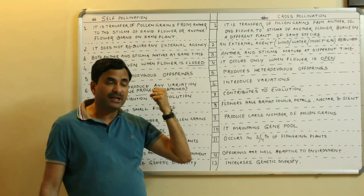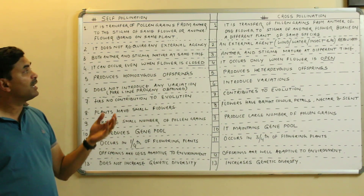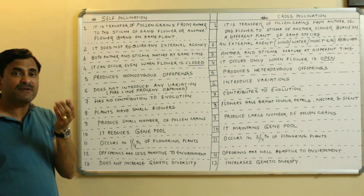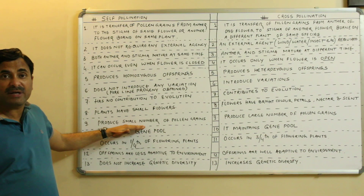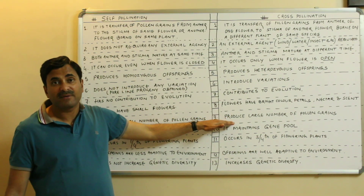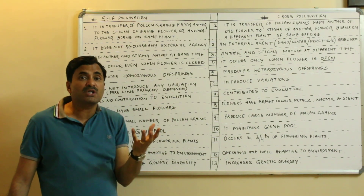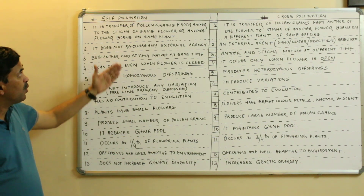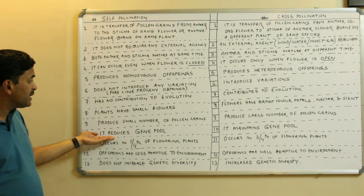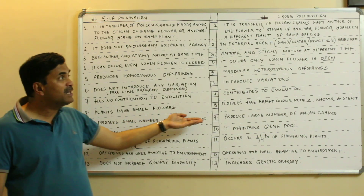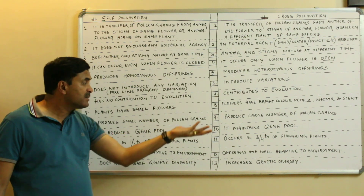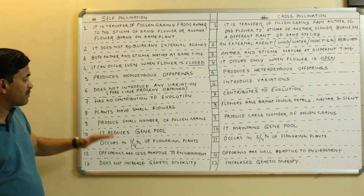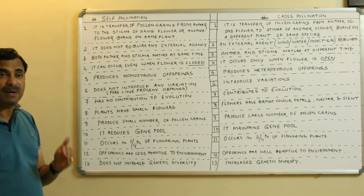Eighth point: self-pollination requires only a small number of pollen grains, since transfer occurs within the same flower or the same plant. But in cross-pollination, a large number of pollen grains are required because many pollen grains are lost during transfer. Ninth point: self-pollination reduces the gene pool because variations are not produced, while cross-pollination maintains the gene pool by producing variations.